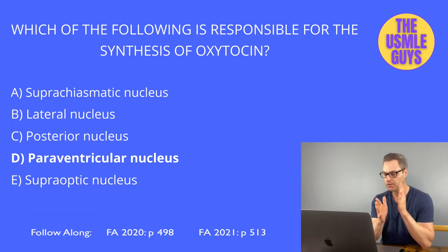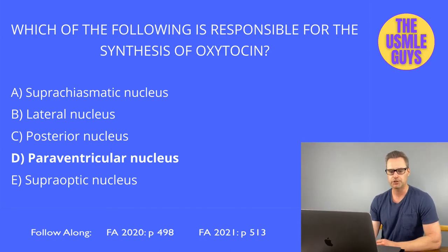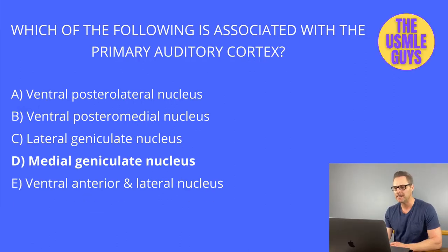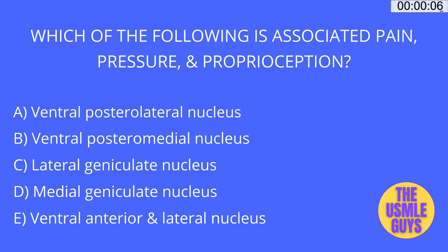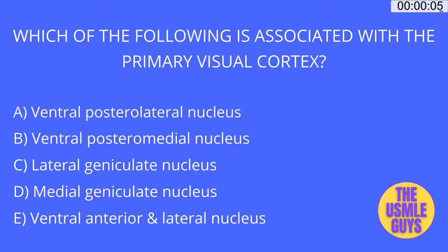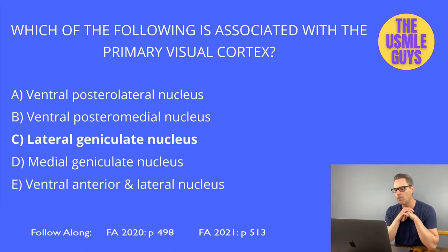Next up, the thalamus — we'll do the same thing with a few multiple-choice questions. The correct answer to the first question is D, the medial geniculate nucleus. The correct answer to the second question is A, the ventral posterior lateral nucleus. The correct answer to the last question is C. Let's go over the different nuclei of the thalamus, their input, the senses they're responsible for, and their destinations.